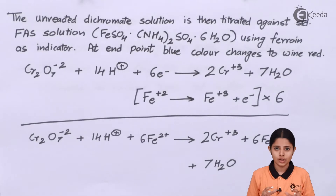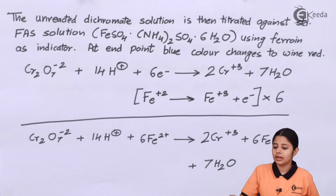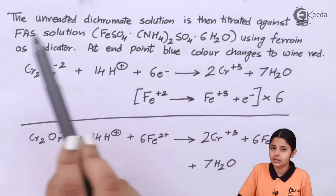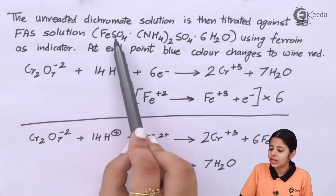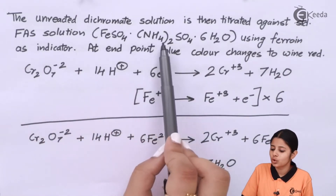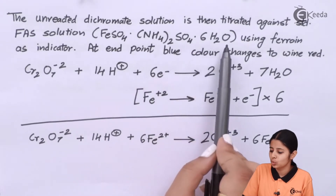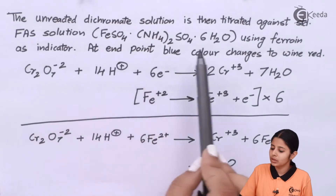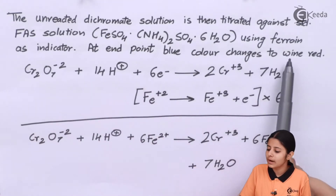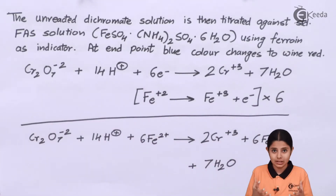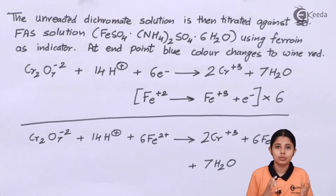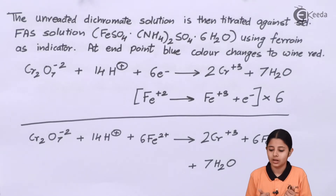The unreacted dichromate solution is titrated against standard FAS solution — iron(II) ammonium sulphate, Fe(NH4)2(SO4)2·6H2O — using ferroin as an indicator. At the end point, the blue color changes to wine red, confirming how much oxygen has been used up.